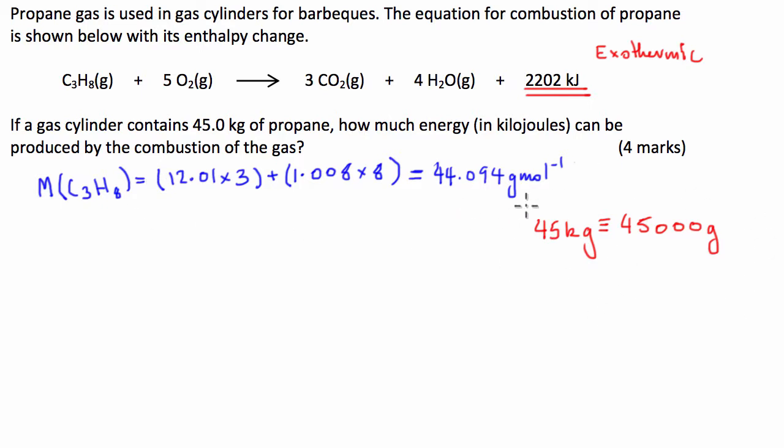So now we know the mass in grams of propane that we have, we can work out the number of moles. We know the number of moles is equal to the mass divided by the molar mass, which is equal to 45,000 grams divided by the molar mass of propane, which is 44.094.